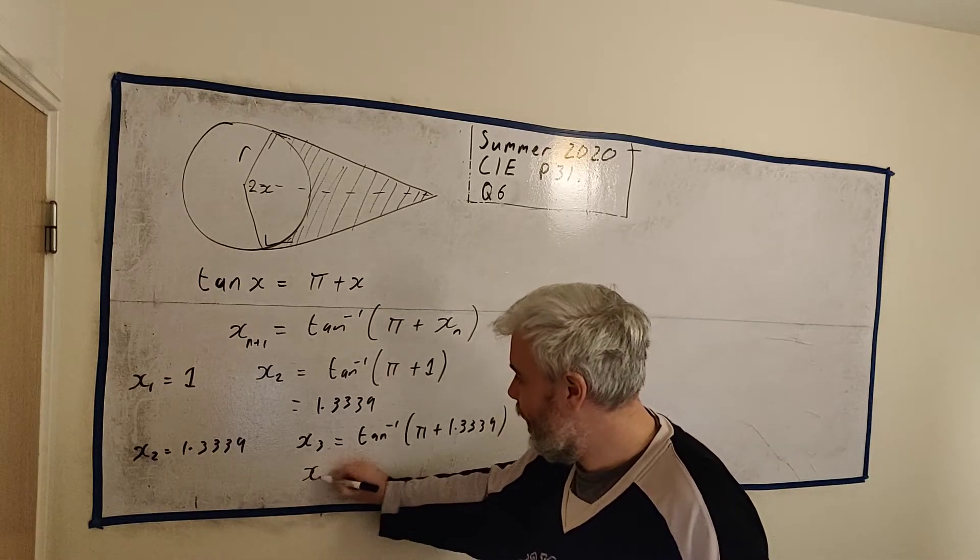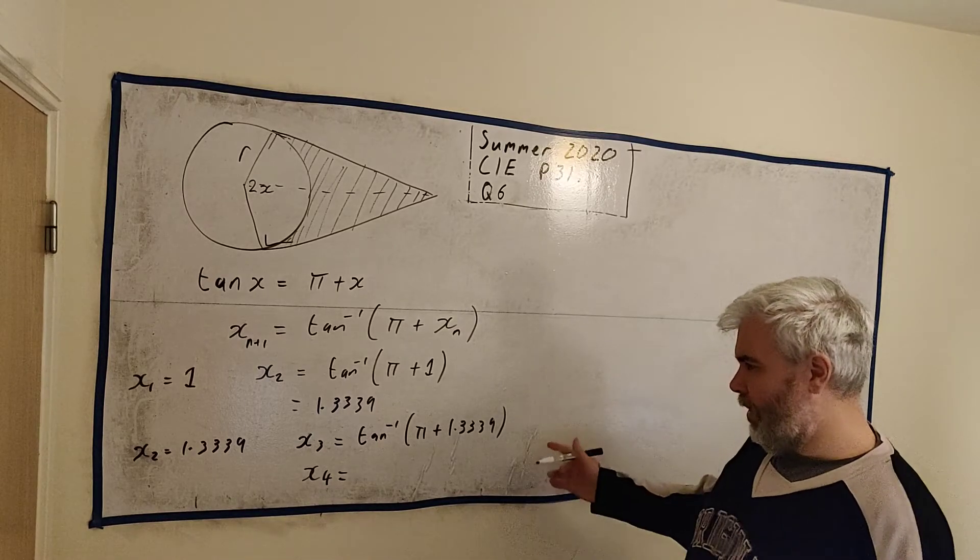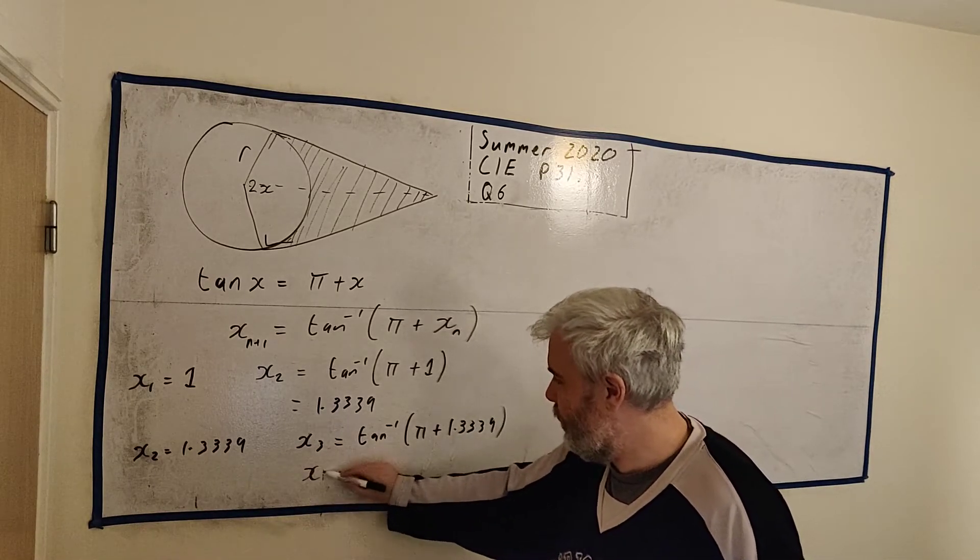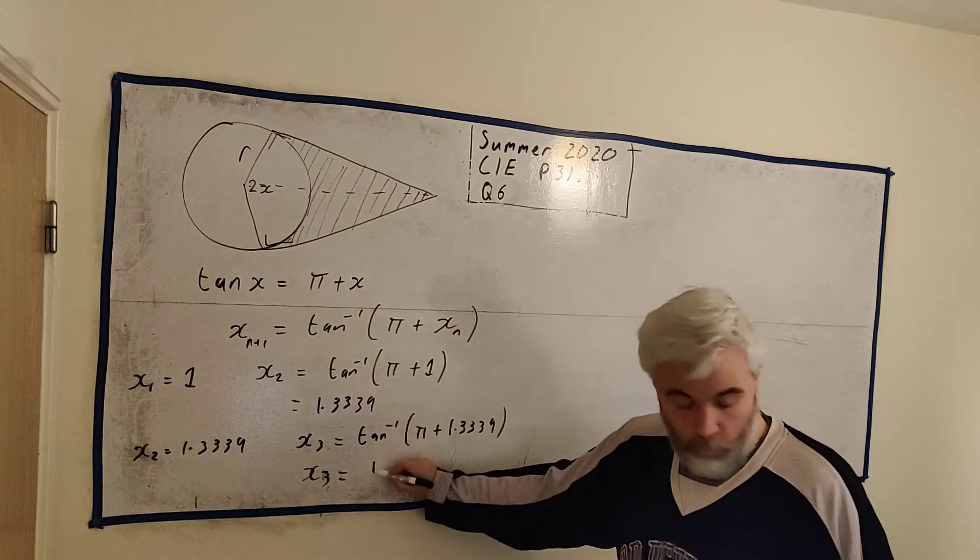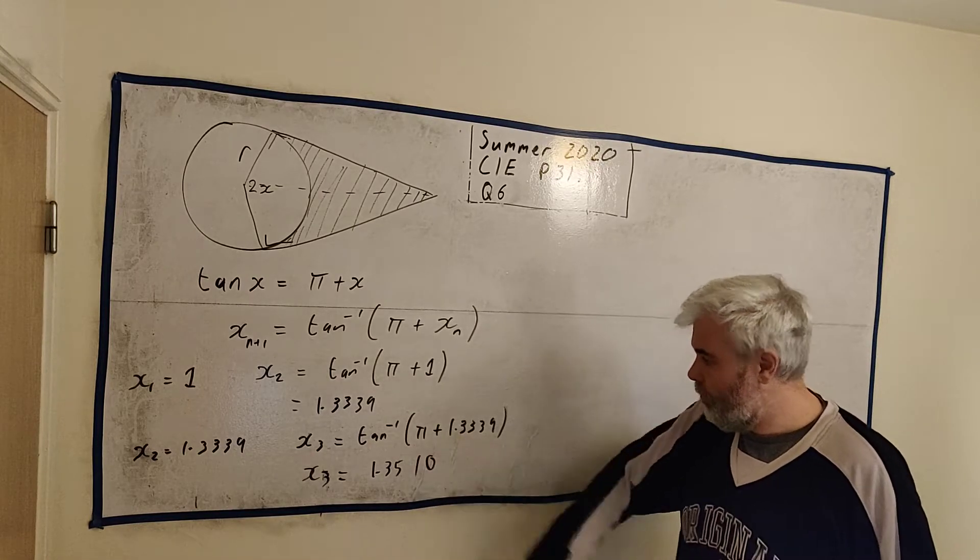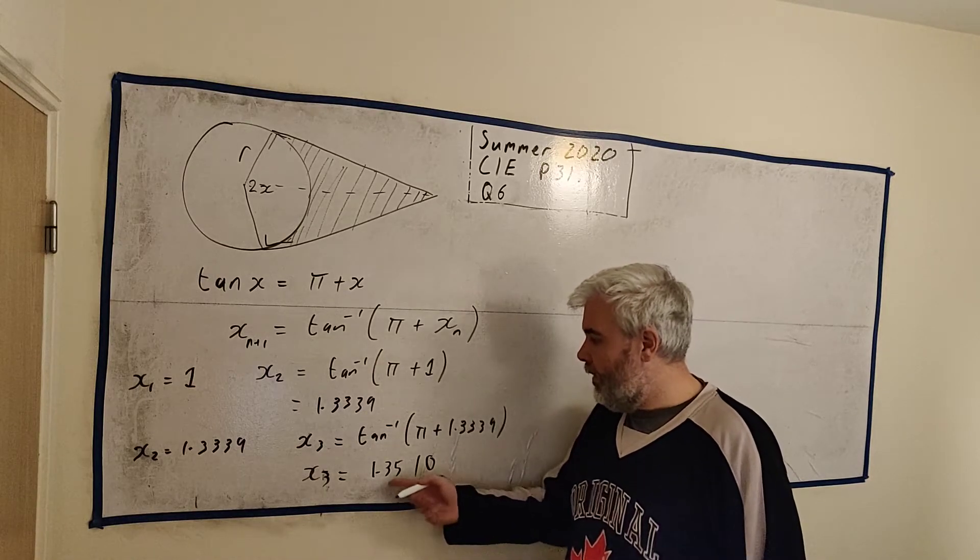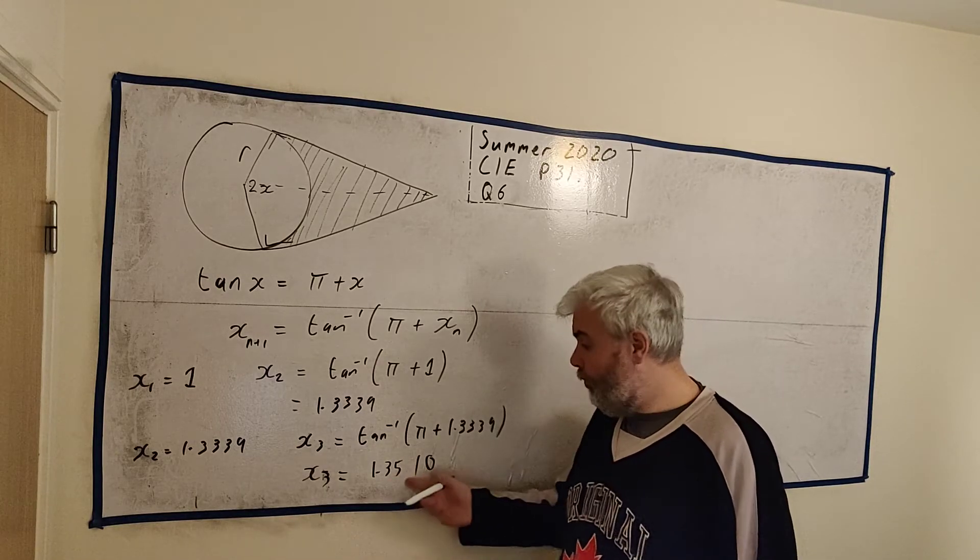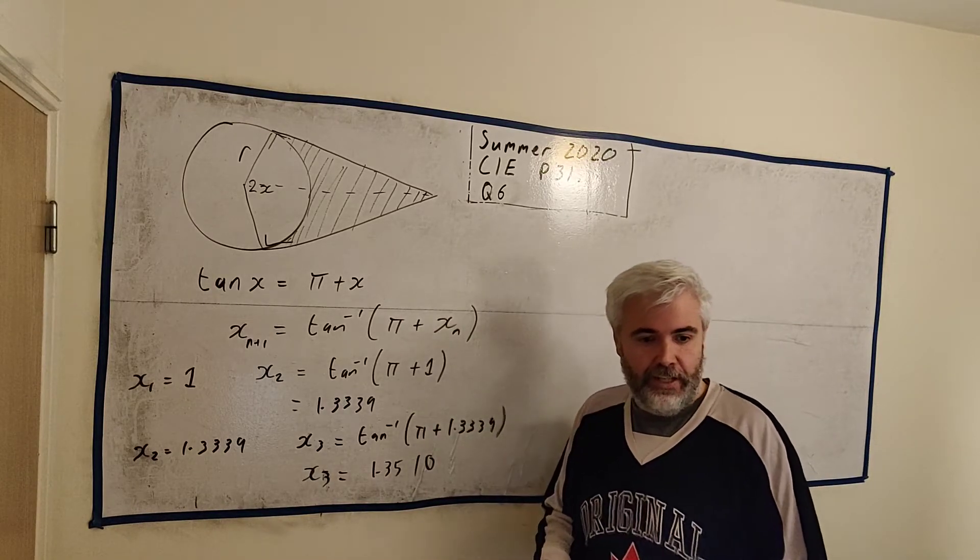Therefore, x3 equals the inverse tangent of pi plus 1.3339. And that will give me x3 being equal to 1.3510 if you want to write it in. Okay, so you stay going like this until the first two numbers repeat, or all four numbers repeat if you want. You stay going until you've got exactly into your answer. I'll show you how to do that much easier with a calculator.